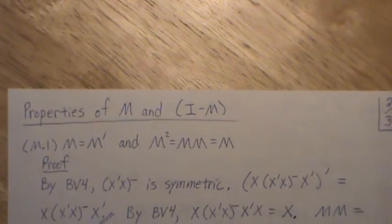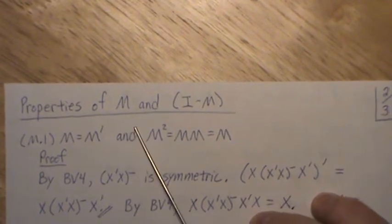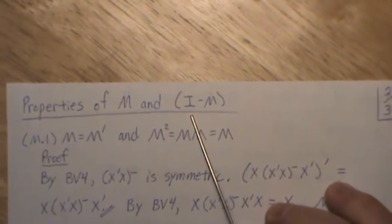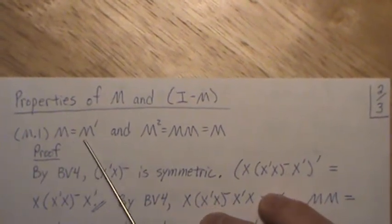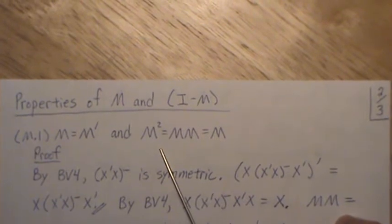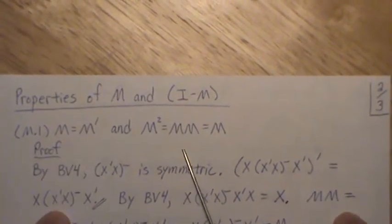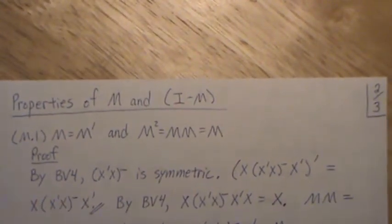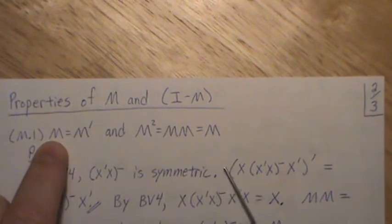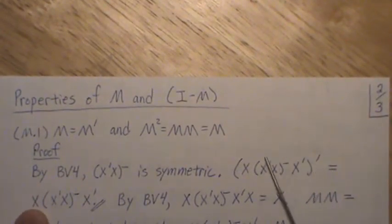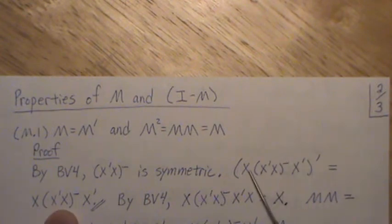We want to study the properties of M and I minus M, as these play a critical role in hypothesis testing, confidence intervals, contrasts, and so on. We want to show that M is symmetric and idempotent — any matrix that's symmetric and idempotent is a perpendicular projection matrix onto its own column space. By BV4, (X'X)⁻ is symmetric. Taking the transpose of M, it reverses order and transposes each factor, but since (X'X)⁻ is symmetric, we get M back — so M is symmetric. By background video 4, M times X equals X. So M squared equals M, and M is idempotent.